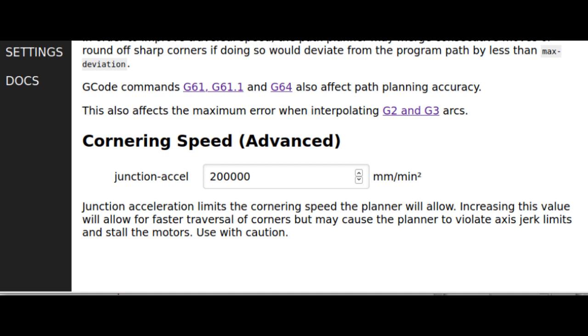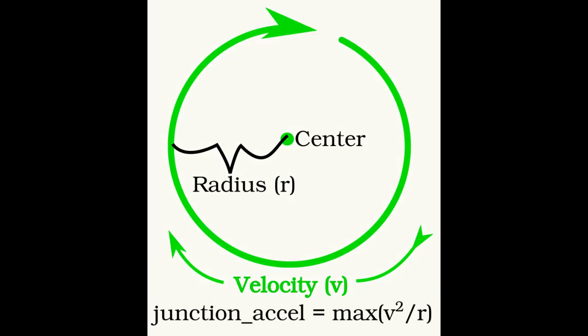The last parameter that we'll discuss is the Junction Accel field on the Settings General page. Junction Accel sets the maximum allowable acceleration towards the center when traveling around an arc. The faster the machine travels around the arc, the higher the acceleration. The smaller the radius of the arc, the higher the acceleration.